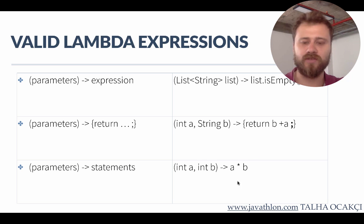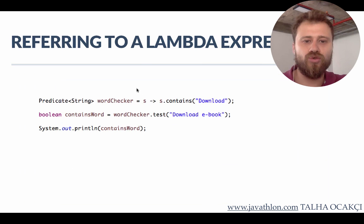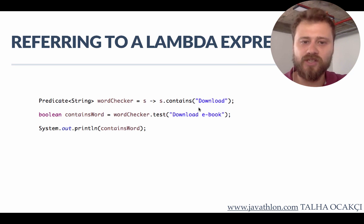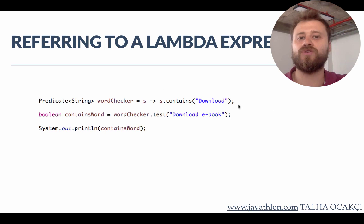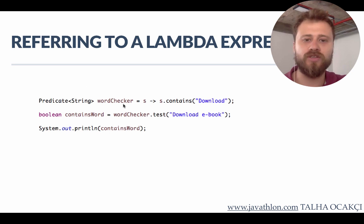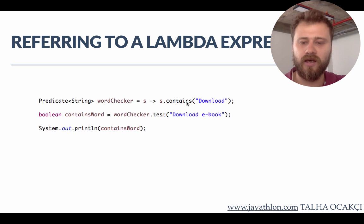You can refer to a lambda expression with a functional interface reference. Here the input is a string, which is input to the predicate's test function internally, and this is the implementation inside the test method. Since this returns a boolean, JVM understands that this lambda expression refers to a predicate. If you try to refer to this lambda expression with a consumer or supplier, this will not compile because the only functional interface that returns a boolean is predicate.